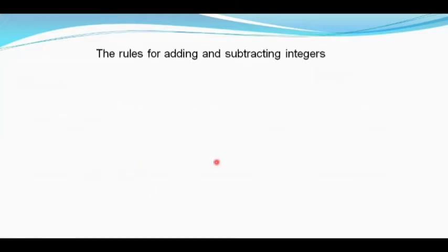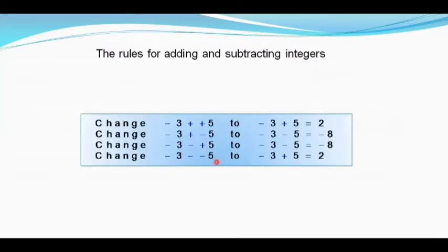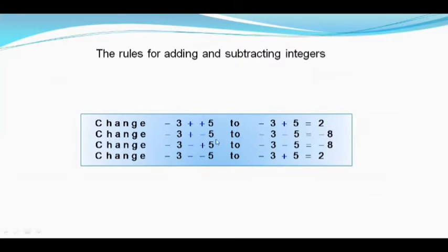Let us understand the rules for adding and subtracting integers. When we have minus 3 plus of plus 5, we multiply the signs: plus into plus gives plus. So we get minus 3 plus 5. With one negative and one positive integer we subtract: 5 minus 3 is 2, and we give the sign of the bigger number — 5 is bigger, so the answer is positive 2.